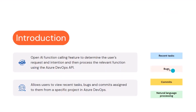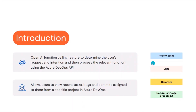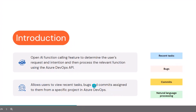In this example I used the OpenAI function calling feature to determine the user's request and intention. Once we know what the user wanted, we use the OpenAI function calling feature to determine that, then we use the response from OpenAI to call our own API — in this sample I'm pulling from the Azure DevOps API. I'm asking for recent tasks, bugs, and recent commits into a specific project, while doing natural language processing of the user query.